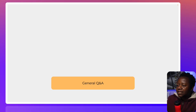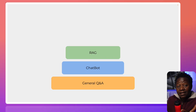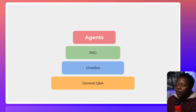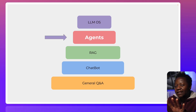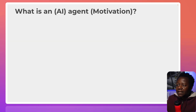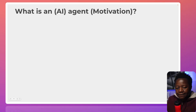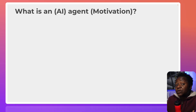So we've looked at General Q&A, Chatbot, and RAG. Next we look at one of the most exciting pillars: Agents. Let's look at what an agent is. Before we do, let's look at the motivation behind why we would want an agent.